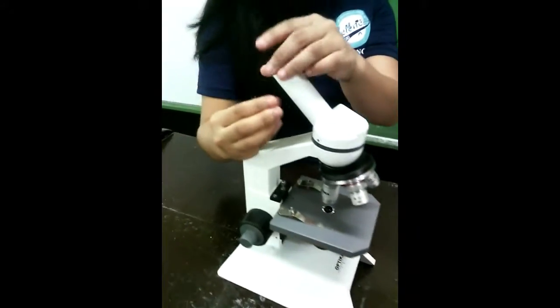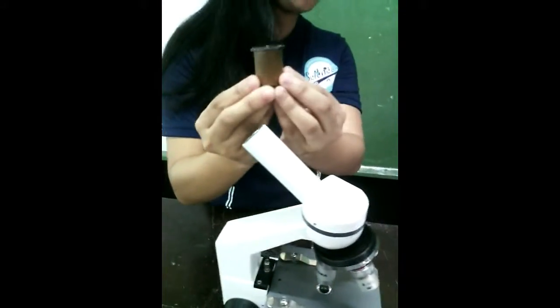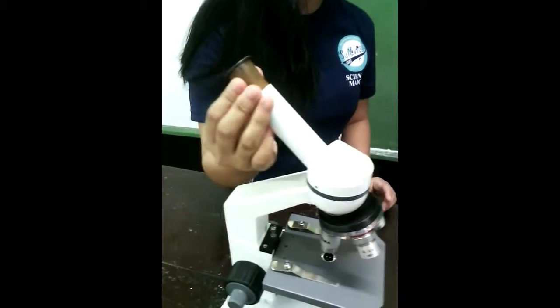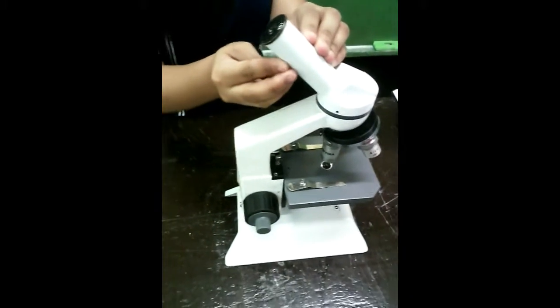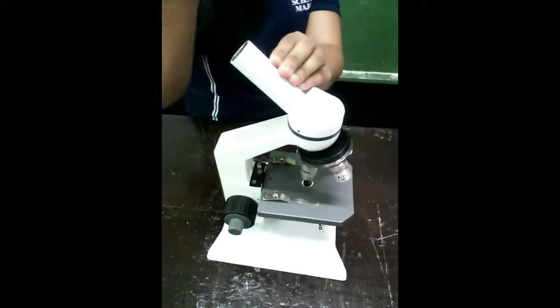This is the eyepiece or ocular. It is a detachable cylinder located at the upper end of the tube. It may have a line inside that serves as a pointer and rotates as the ocular is rotated.